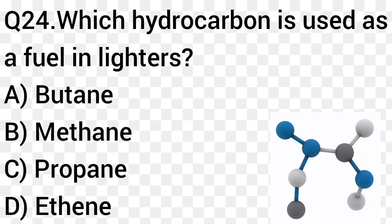Question number 24. Which hydrocarbon is used as a fuel in lighters? Option A: Butane. Option B: Methane. Option C: Propane. Option D: Ethene. The right answer is option A, Butane.